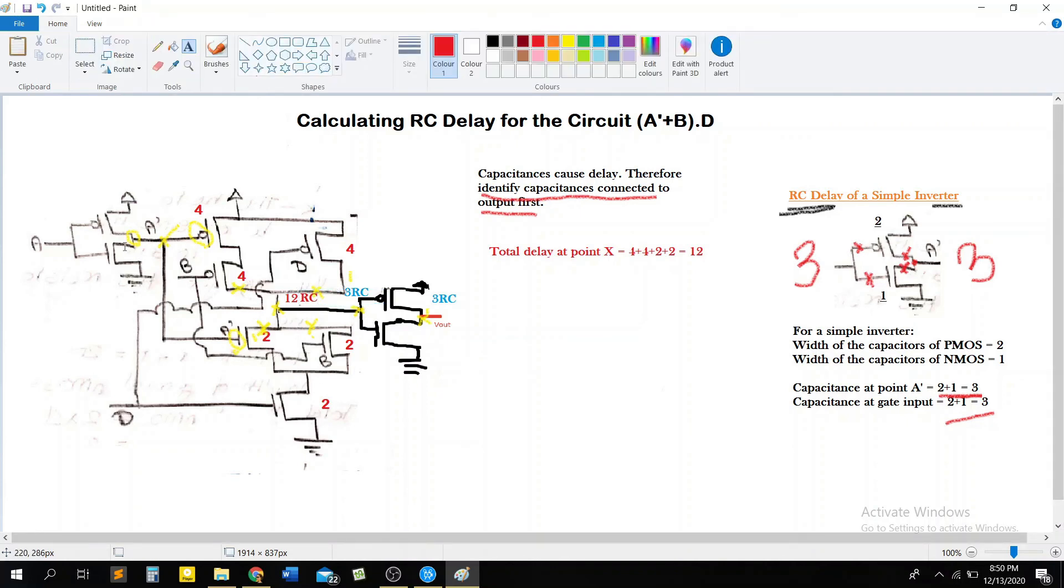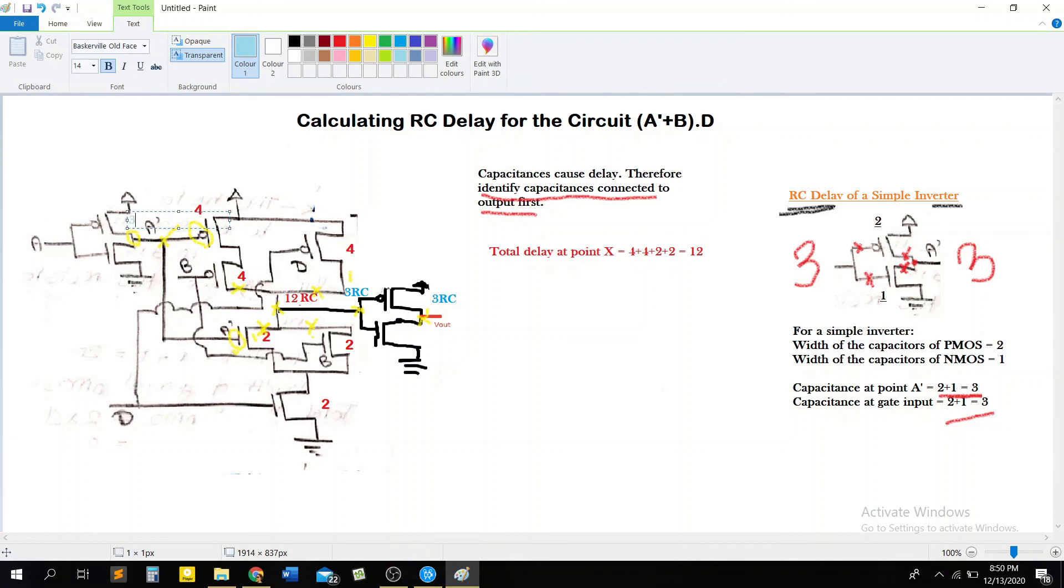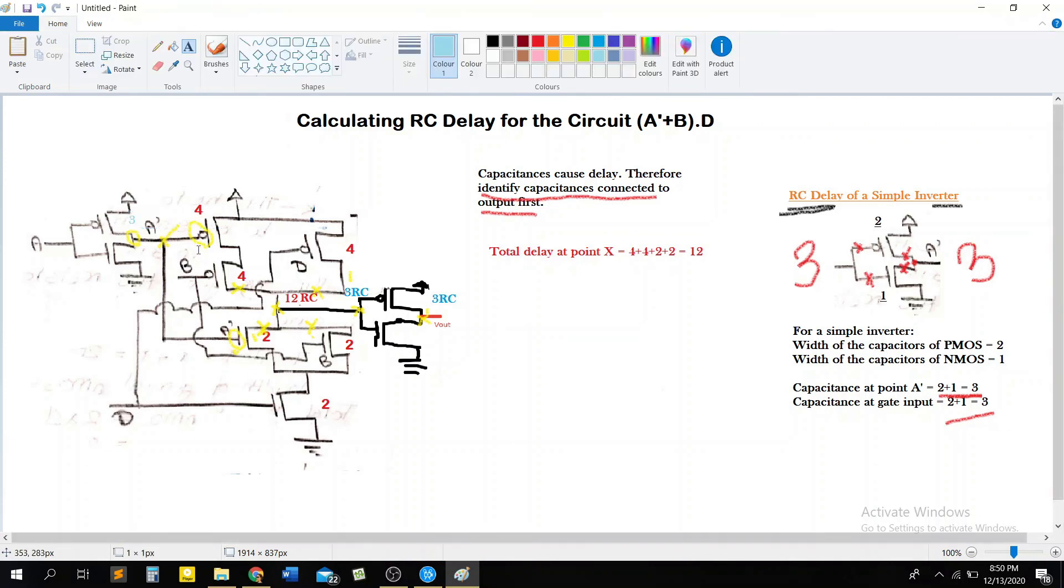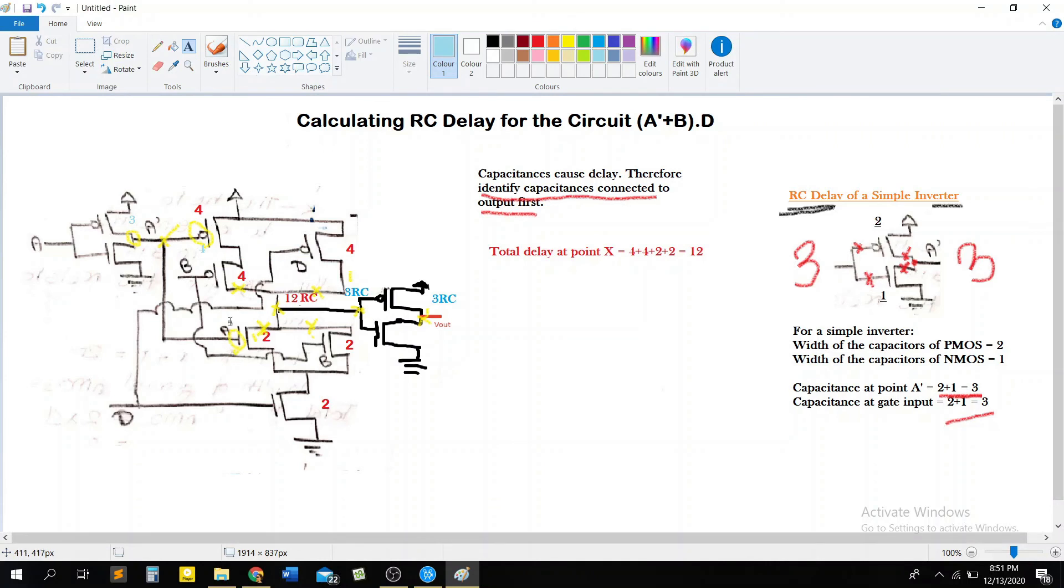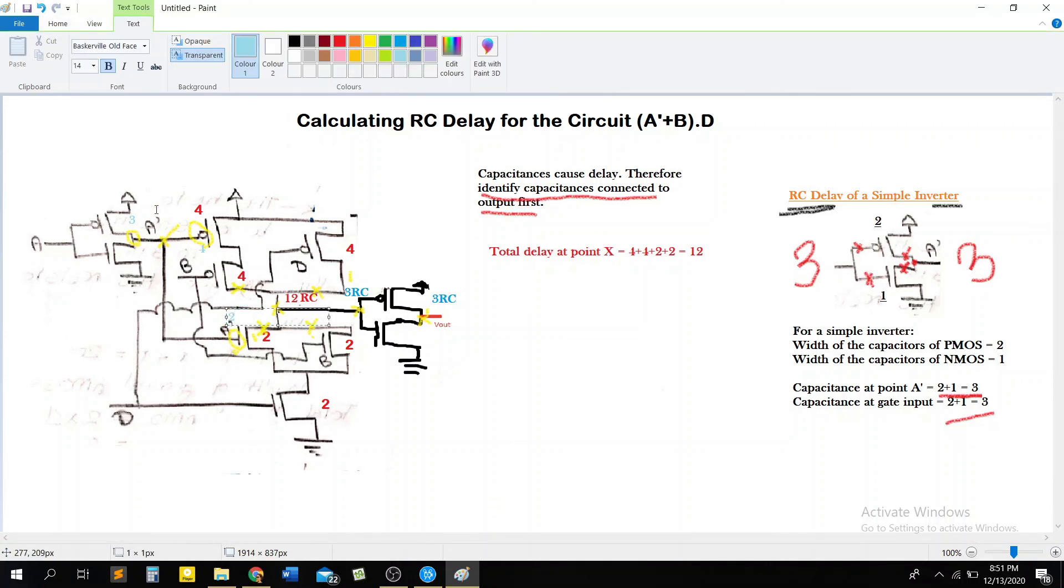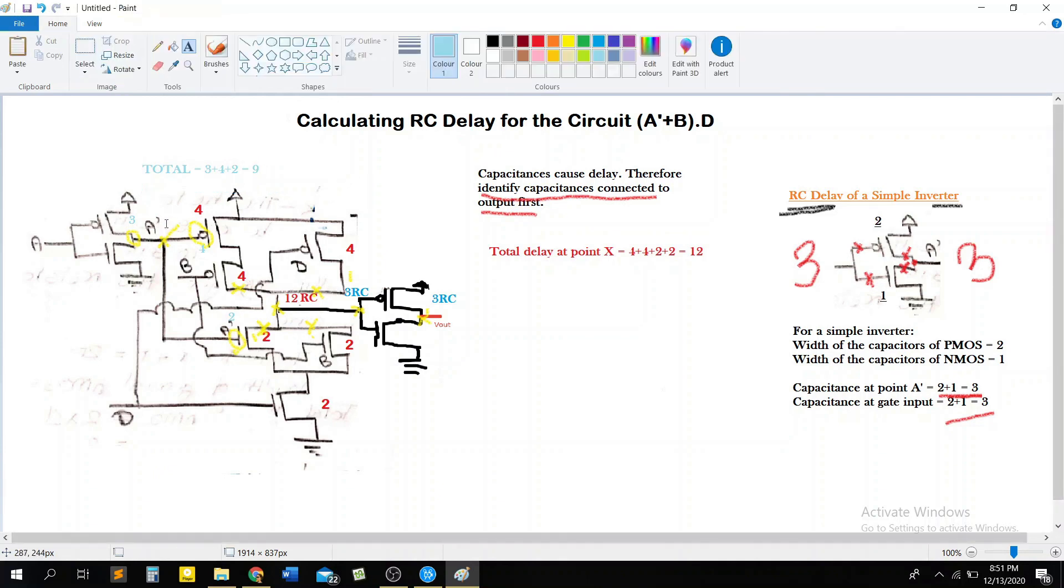Next we have to move on to this final point here. And remember, we are going to have 3 at this output because of the inverter. We are going to have 4 at this input. It's already written there. I'm just going to write it again. And of course we're going to have 2 at this gate input. So the total at this point, it's going to be 3 plus 4 plus 2, and we're going to get 9. So I'm just going to write this total as 9.